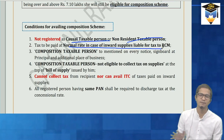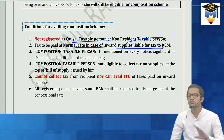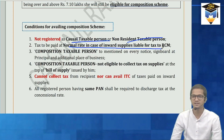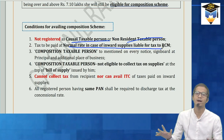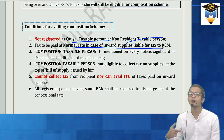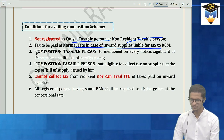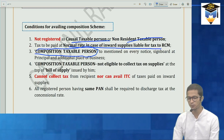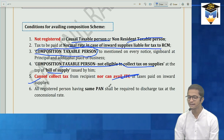The reduced rate is only for your outward supplies, not for inward supplies attracting reverse charge. You must mention on your principal place of business or additional place of business that you are a composition taxable person. On the bill of supply you must write that you are a composition taxable person and not eligible to collect tax on supplies.